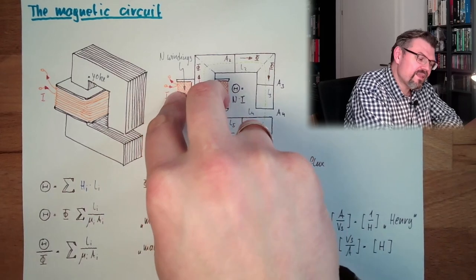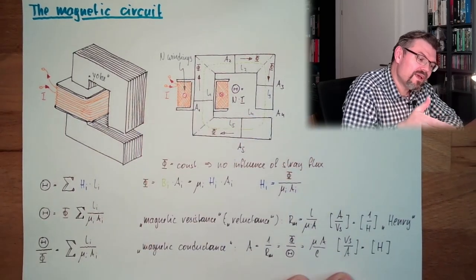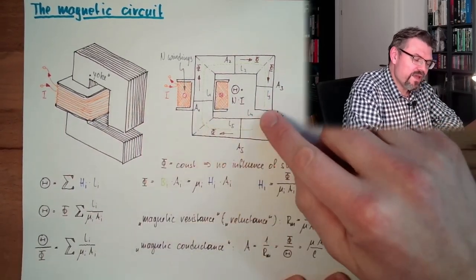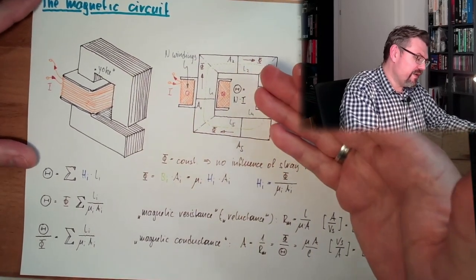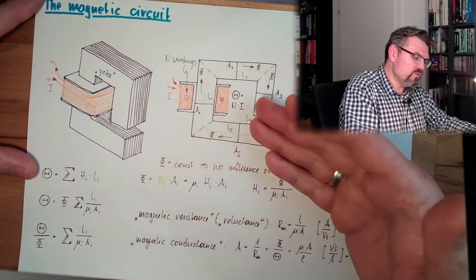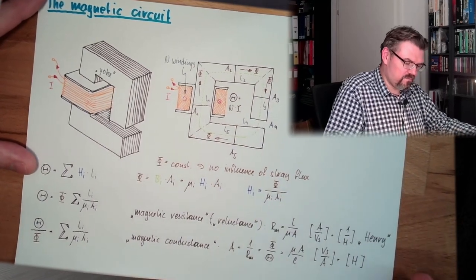So somewhere we have coils inside, then we have to guide the magnetic field to the air gap where it is used. And this is why our magnetic model circuit looks like that. That's it.